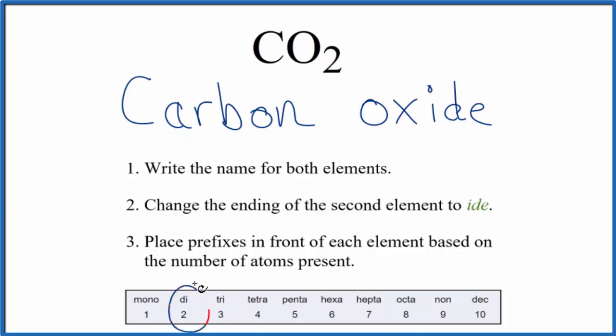So the name for CO2 is carbon dioxide. If you were given the name and asked to write the formula, you know you have one carbon because it just says carbon, and di tells you there are two oxygens, so you have CO2 as the formula.